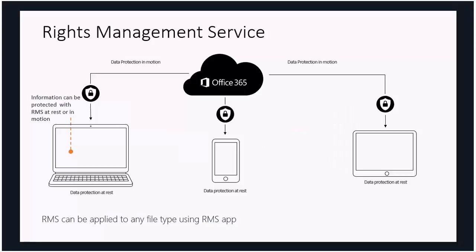We also have the ability to do Rights Management on files at rest on a PC, so that only the user who has rights to access information can do so. If a rights-managed protected file is on a laptop that's compromised or another user logs in, that other user won't be able to access or view the file if they don't have rights. This gives true end-to-end protection of information based on who is accessing it, once they've been identified. You can implement Information Rights Management quickly and easily in Office 365.